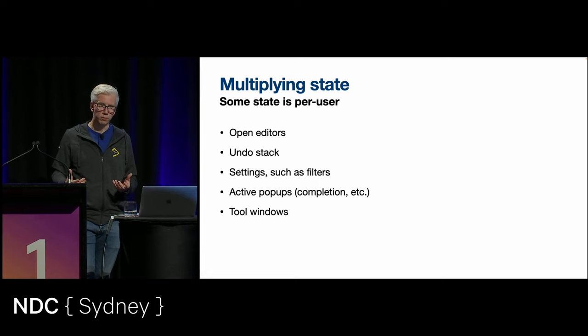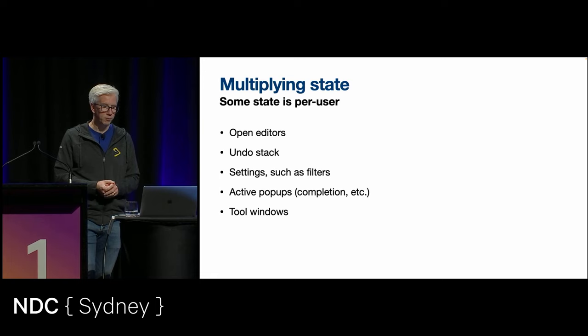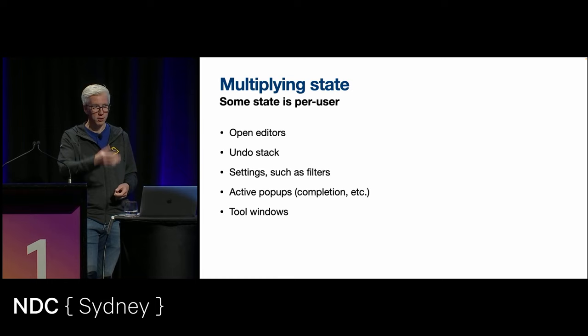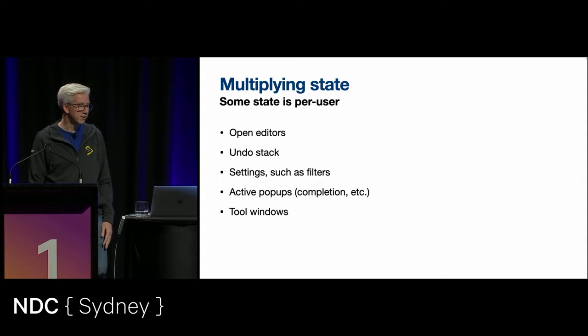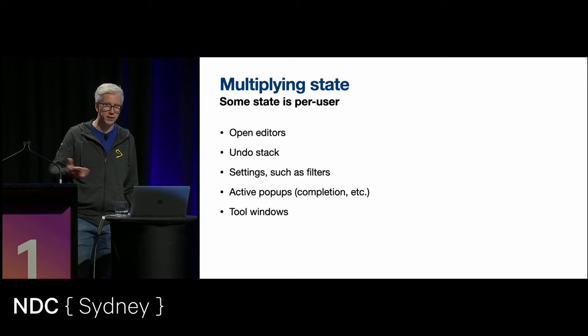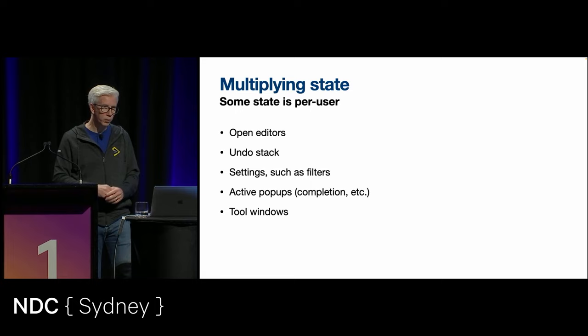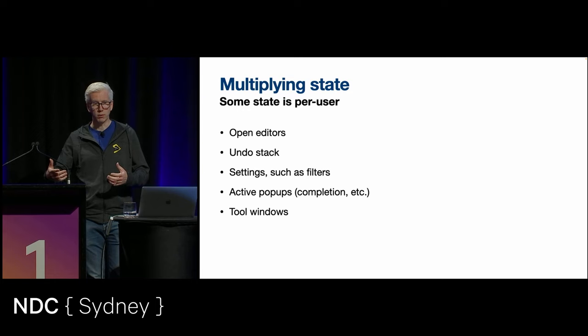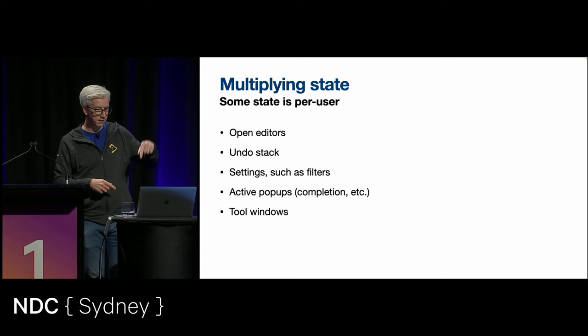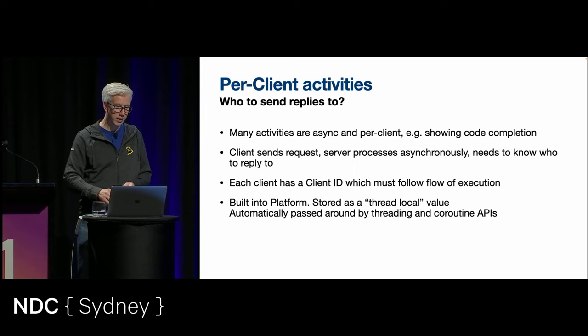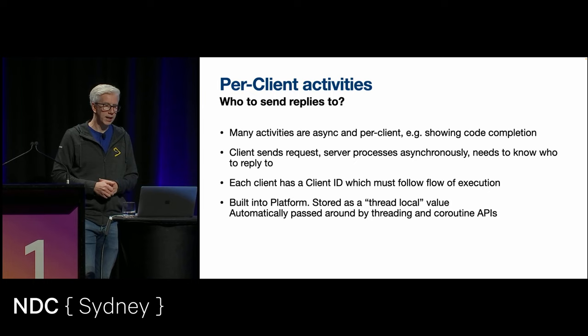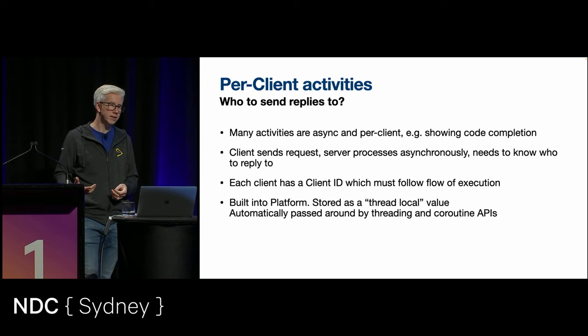The difference is that the results of these things have to get broadcast to all clients — it's not just a one-to-one message. There's also state which is per user. With a single IDE, we've just got one set of view models. But with multiple users, we need to track extra state. Your list of open editors — if there are multiple people, you need multiple of those. The undo stack is a good one: if I undo something, I don't want to undo your changes, and I don't want my changes being undone by someone else. Various settings, filters in pop-ups, the current completion pop-up, what tool windows are shown — the project view for instance — we don't necessarily want to show the same project view to everybody.